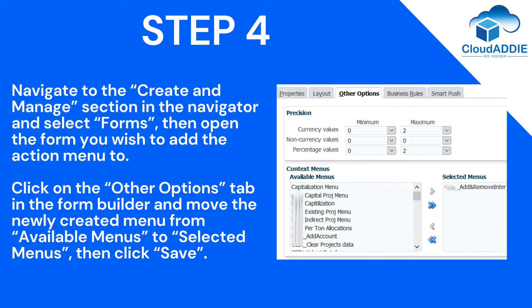Step 4. Navigate to the Create and Manage section in the navigator and select Forms. Then open the form you wish to add the action menu to. Click on the Other Options tab in the form builder and move the newly created menu from Available Menus to Selected Menus. Then click Save.